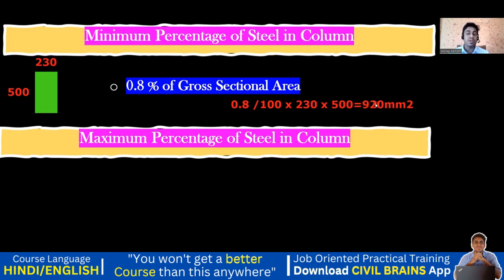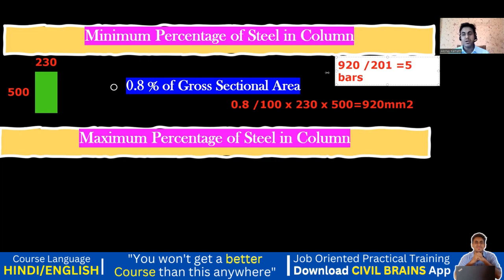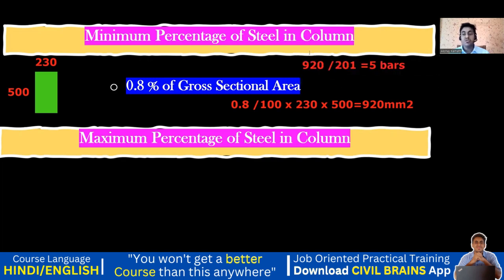Now, how do we decide bar arrangement for 920 mm²? If I take a 16 mm diameter bar, its area is 201 mm². Dividing 920 by 201 gives 4.5, which we round up to 5 bars. So the minimum required number of bars is 5.